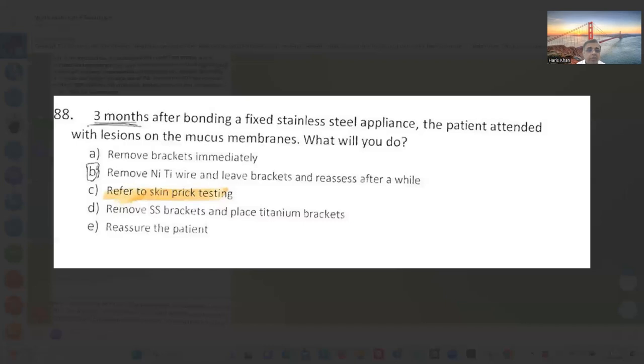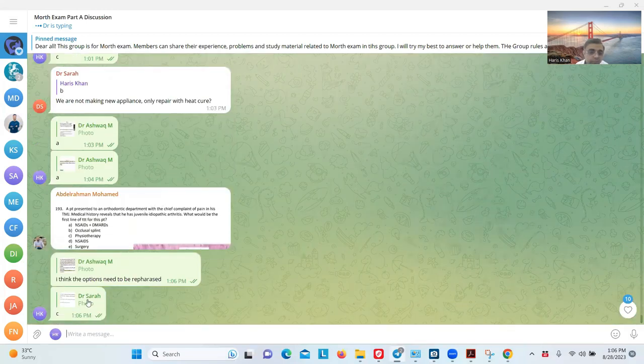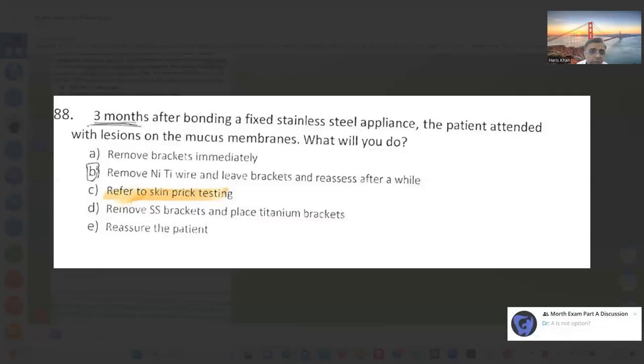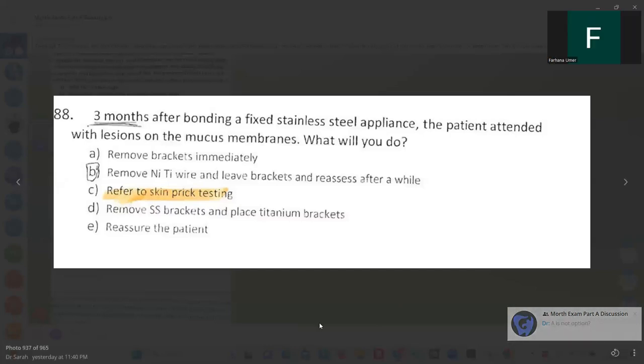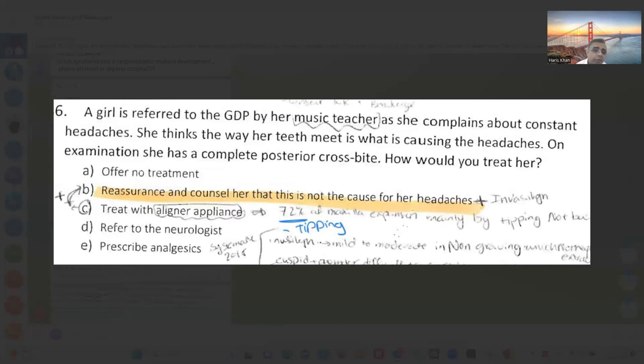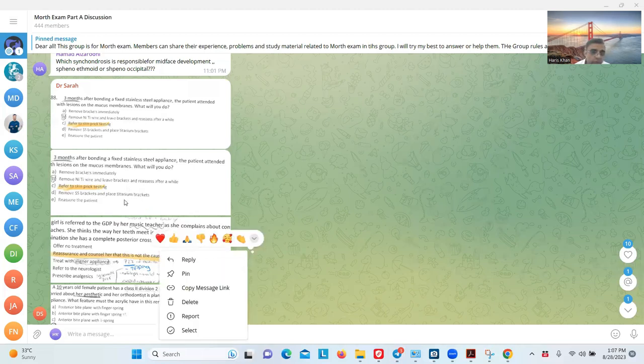The first thing is that I should say myself, but do not want to take the onus of responsibility that TMJ problem wouldn't be solved. Three months after debond with stainless steel appliance, the patient ends with lichen on the mucous membrane. What will you do? I will do patch testing, right? Remove brackets, remove nickel-titanium wires. Because it's three months, I'll do patch testing. Which lichen lesion? If it's weird, then I might remove the nickel-titanium wires. Three months after debond, the patient ends with lichen. Refer to skin prick test, patch testing. I said they don't need it. No longer used in skin practice. Yes.